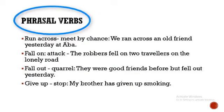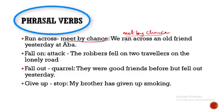'Run across' someone means to meet them by chance or come across somebody by chance. For example: 'We ran across an old friend yesterday at Banjo,' meaning we met an old friend by chance. Then 'fall on' means to attack — for example: 'The robbers fell on two travelers on the lonely road,' meaning the robbers attacked two travelers.